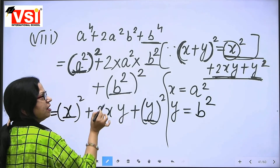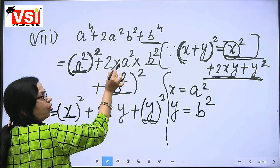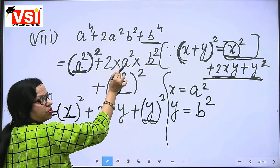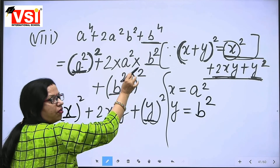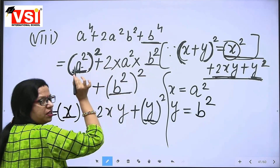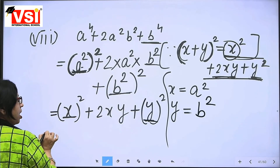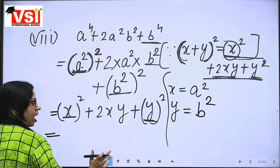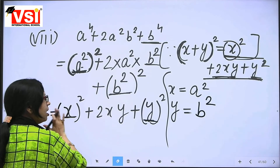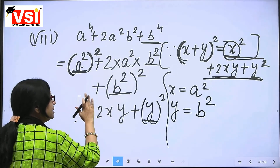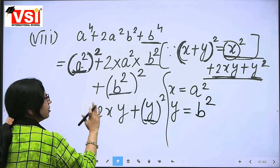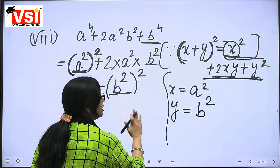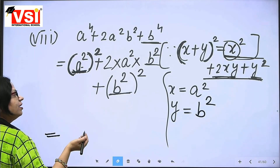Only the values are being asked. We need to reduce to X plus Y whole square, so we need X and Y values. X represents A square and Y represents B square. So here Y value is B square. X is A square and Y is B square — multiply accordingly and it is done.